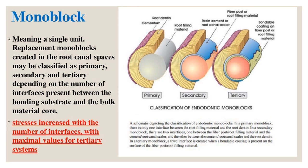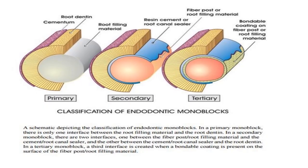Monoblock: meaning a single-unit replacement. Monoblocks created in root canal spaces may be classified as primary, secondary, and tertiary depending on the number of interfaces present between the bonding substrate and the bulk core material. Stresses increase with the number of interfaces, with maximal values for tertiary systems.